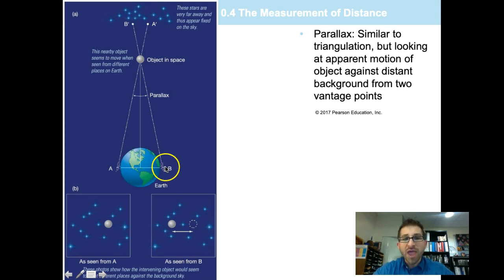So if we have a known baseline, like the width of the Earth, or like the distance from one side of Earth's orbit to the other, let's say from the month of December to the month of June, we can now have a known baseline to measure from.